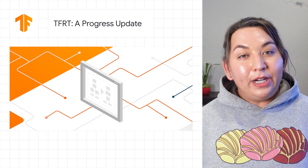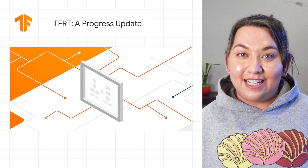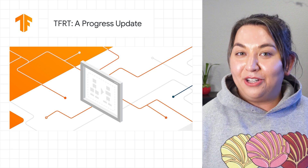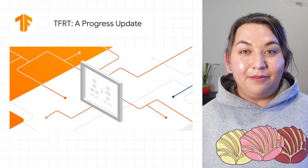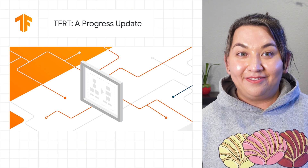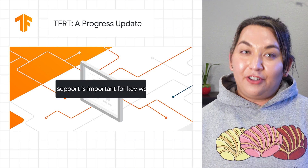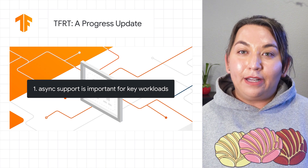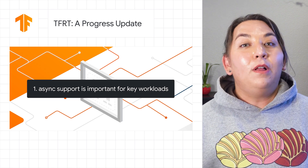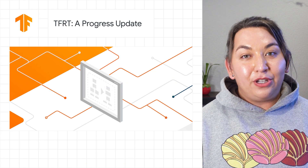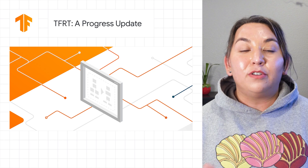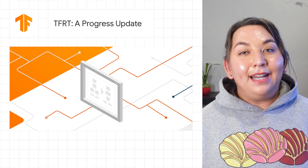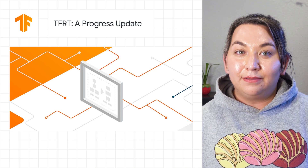We've been working on implementing and validating these ideas, and we want to share some interesting technical lessons learned beyond what was in our original design. First, async support is important for some of the key workloads, while fast sync execution is critical for many other workloads, including small embedded ML models.